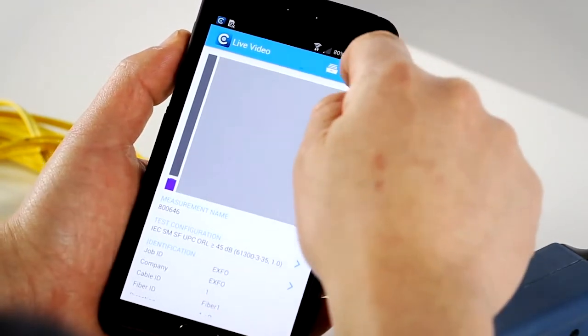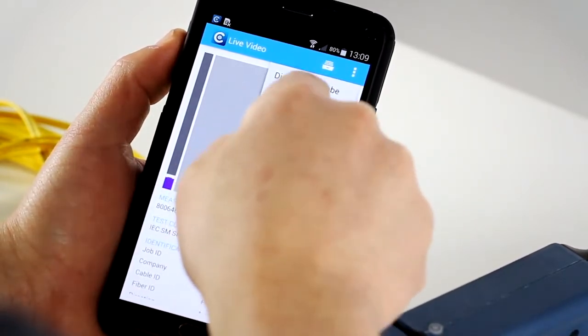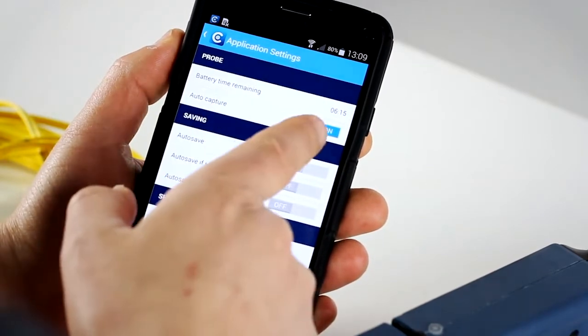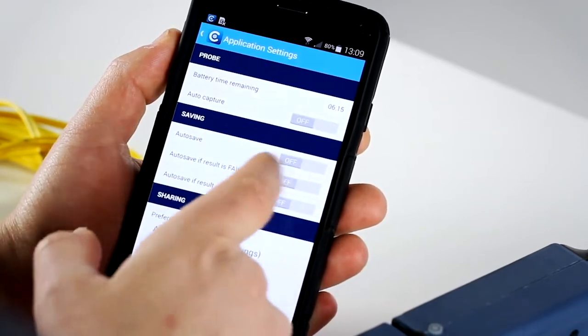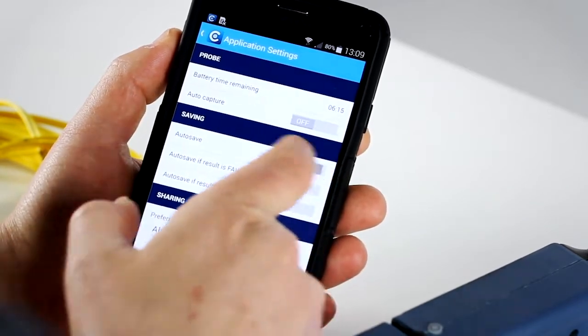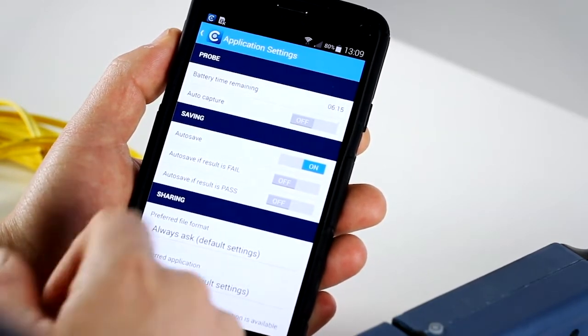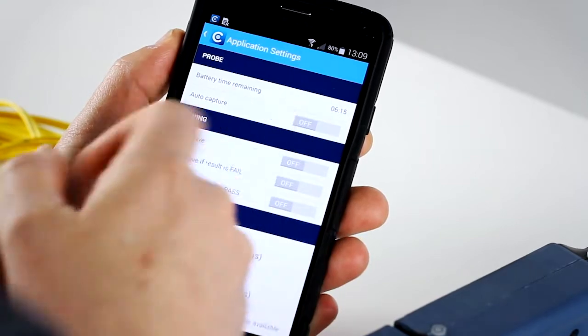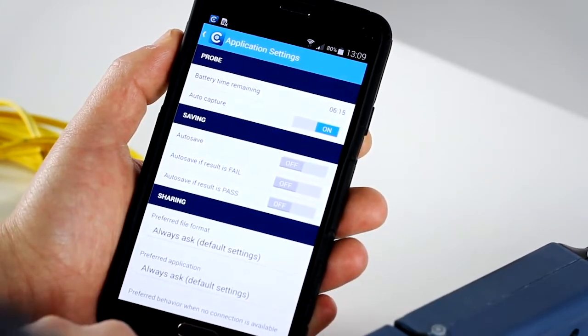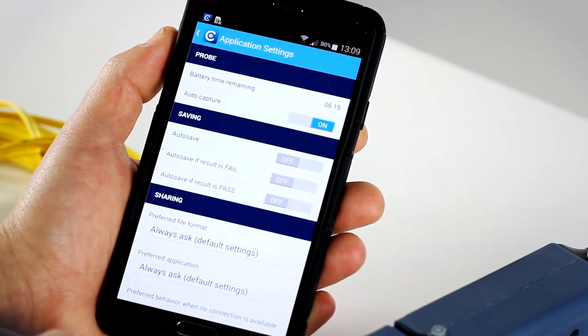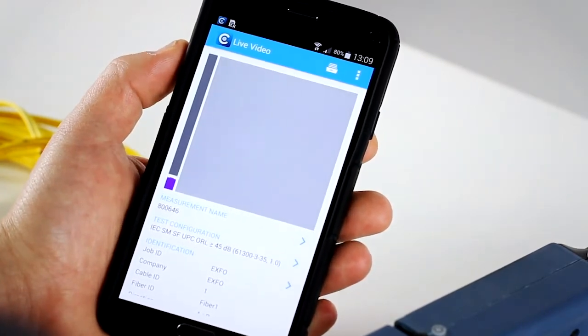Another aspect which is interesting is about the application settings. If you go in this section here, you can decide to remove the auto-capture and make the capture manual. Same thing for the saving. You can decide to save the result automatically, only save the fail or the pass result depending on what you want to do. We'll want to put it to full automation, so we're going to enable the auto-capture once the focus is to the optimal level.